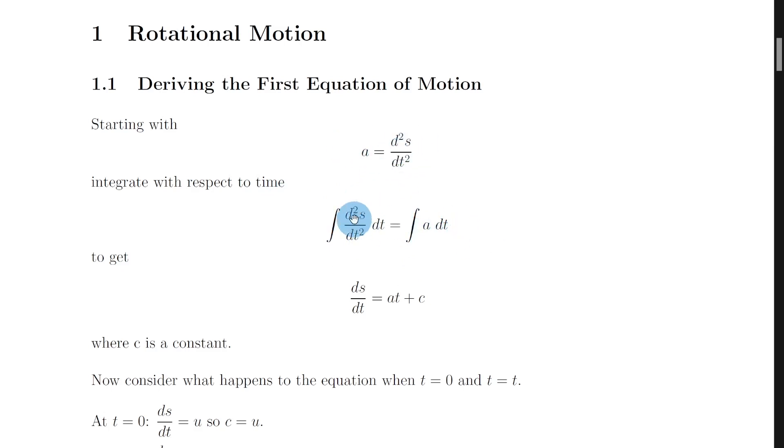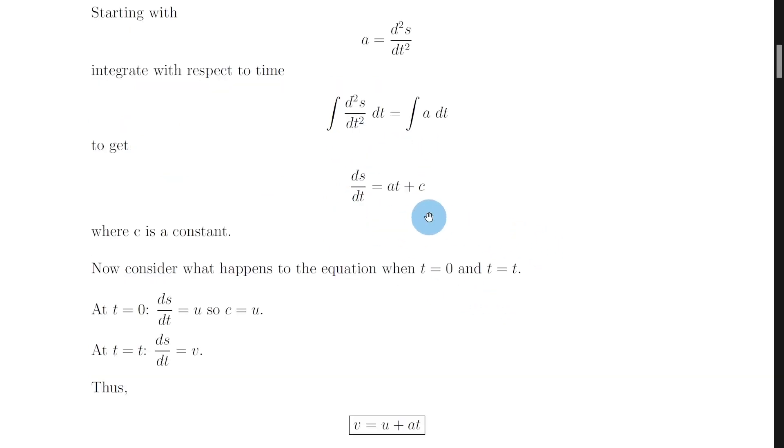And all we've done there is swap the sides around and then integrate. And if you do that you should end up with ds by dt on this side is equal to at plus c, where c is a constant. And you'll notice it's starting to look a bit like v equals u plus at because we've got this at term here.